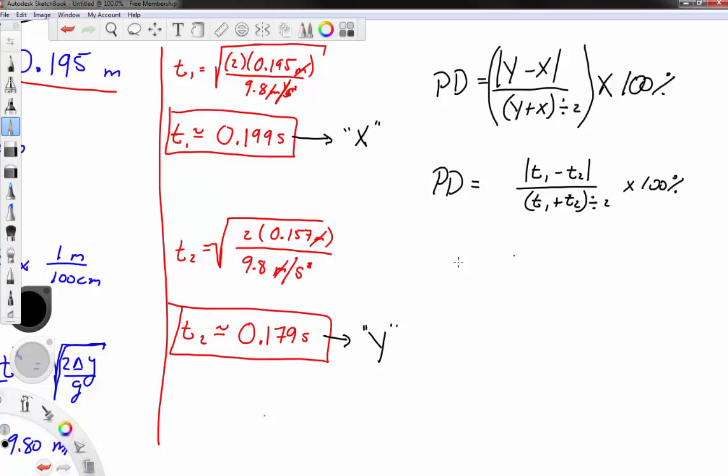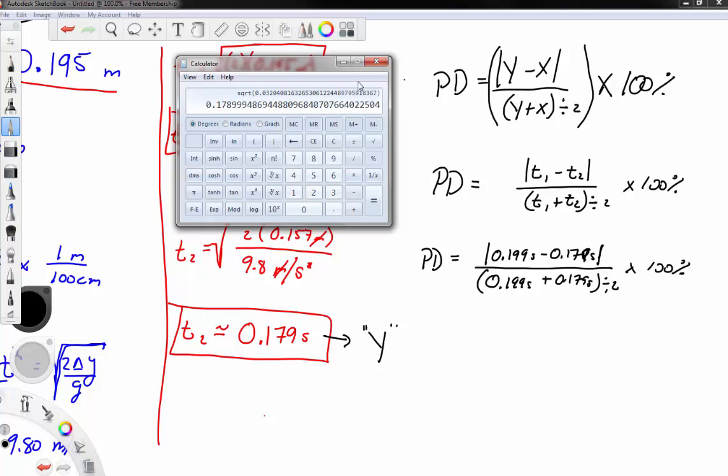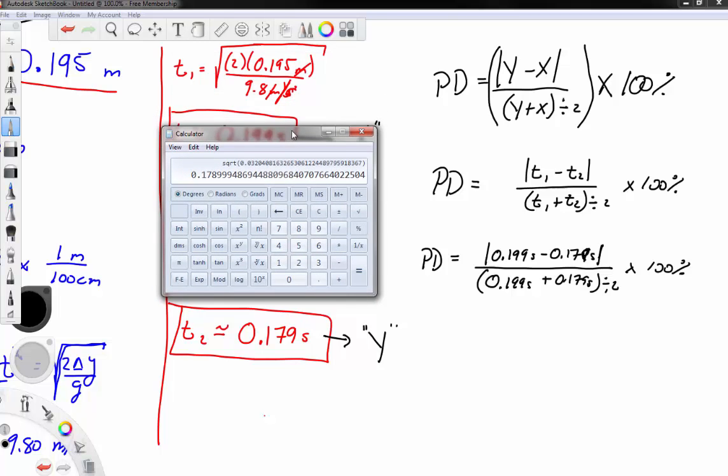So the percent difference in this particular one would basically be t1 minus t2. Take an absolute value. Divided by t1 plus t2. Divided by 2. Times 100%. So if we wanted to plug the numbers in for that, it'd be 0.199 seconds minus 0.179 seconds. Divided by the sum of these two, 0.199 seconds plus 0.179 seconds. And that's divided by 2 times 100%. I'm going to calculate the top number. Then I'm going to calculate the bottom number. Then I'm going to go back and divide the two.